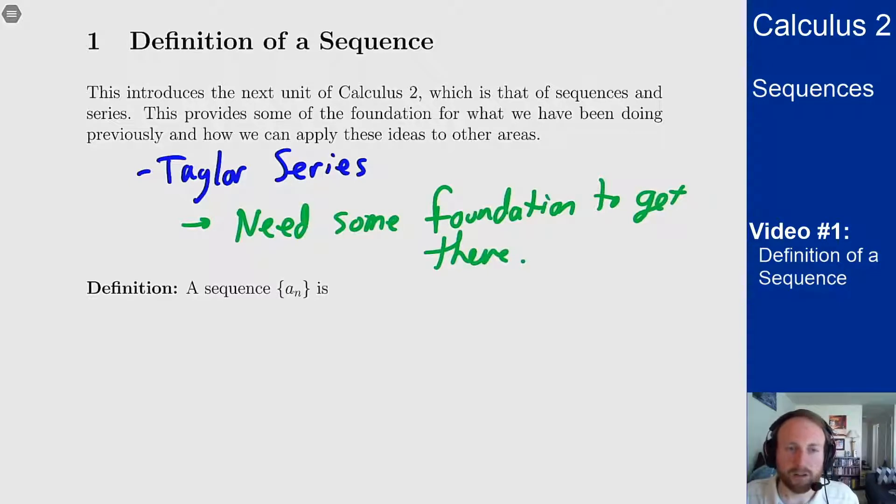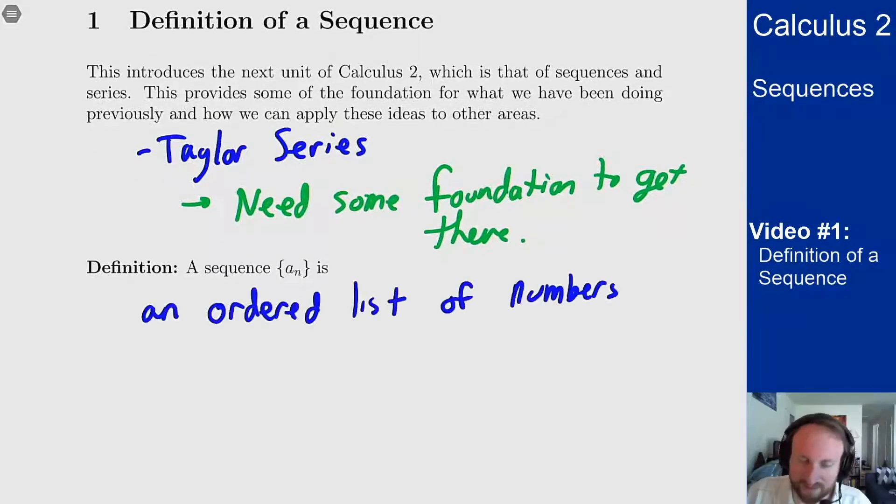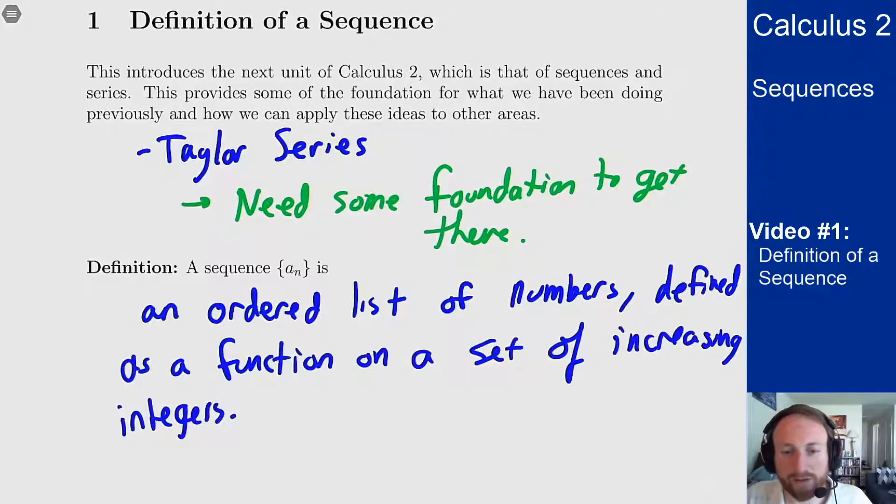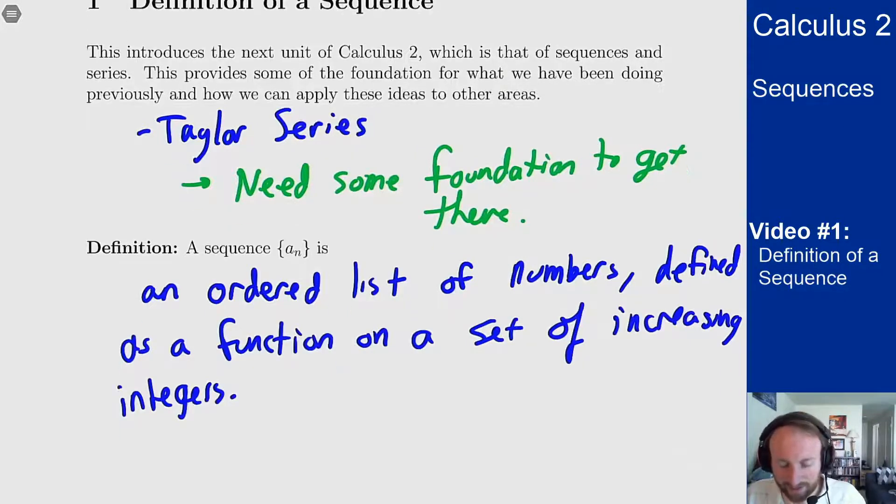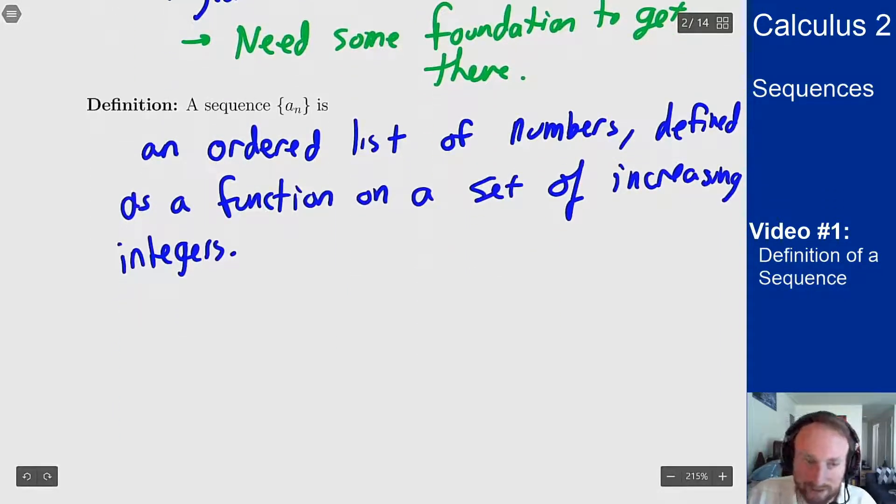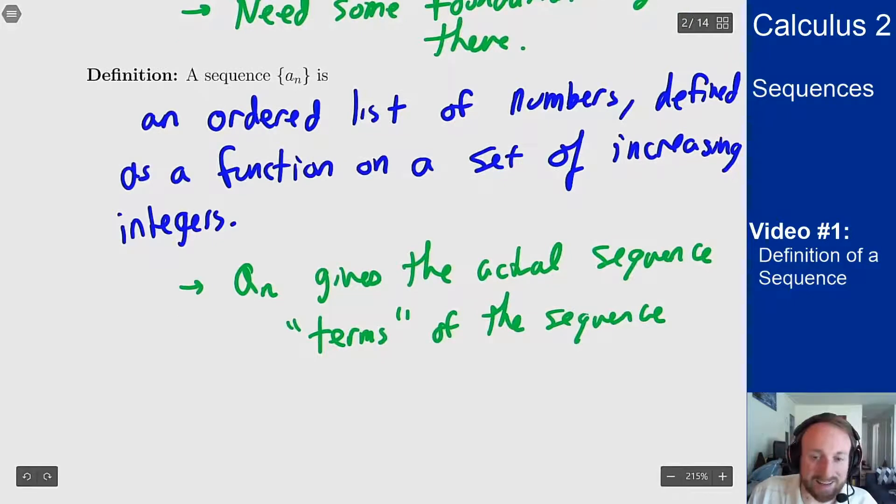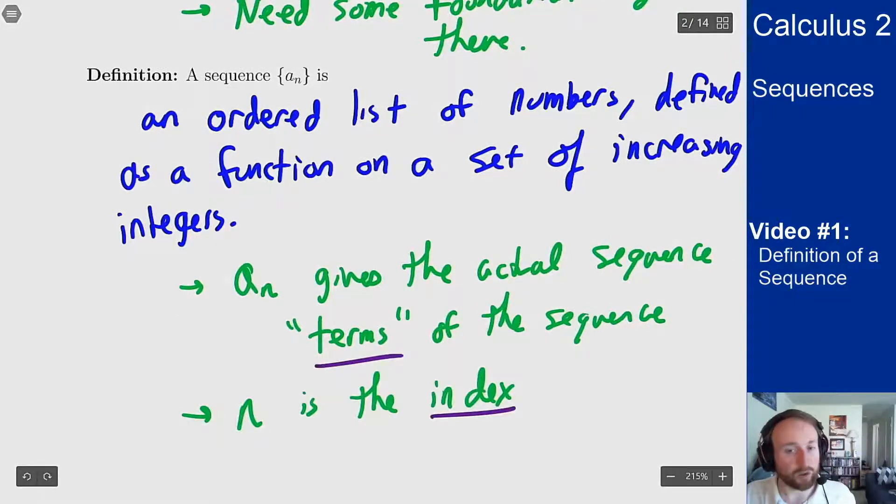The first bit of this foundation is the definition of a sequence. Basically, you want to think of a sequence as an ordered list of numbers, defined as a function on a set of increasing integers. So an gives you the actual sequence, referred to as the terms of the sequence, and n here is the index. It tells you where you are in the sequence.